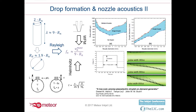We can see drop formation illustrated in three images. In the first, we don't have enough time length in our excitation pulse and we don't quite dislodge the drop. In the second, we produce a good drop. In the third, we produce too much of a cylinder of liquid, and that breaks into more than one part, creating satellites that land on places we don't want. Depending on the application that might be more or less of a problem, but ideally we prefer just a single drop.